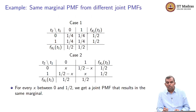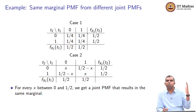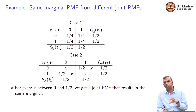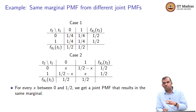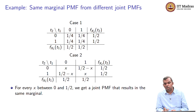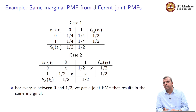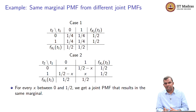I want to quickly point out that the same marginal PMF can result from different joint PMFs. In fact, you can have any number of joint PMFs giving you the same marginal PMF. This is a mistake that many people commonly make: given the marginal PMF, people often assume that the joint PMF is simply the product of the marginal PMFs. That is a valid answer — it is one way to come up with the joint PMF — but it is not the only joint PMF that will give you those marginals.